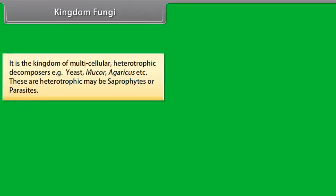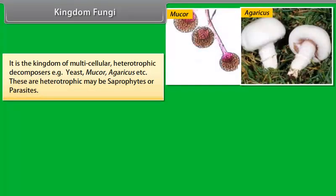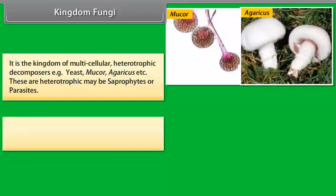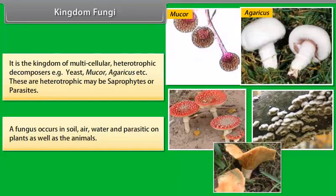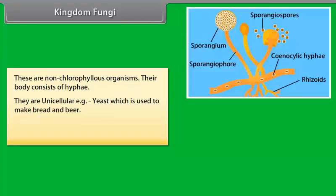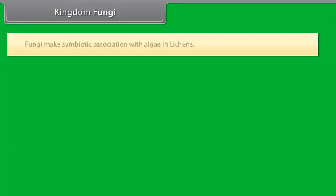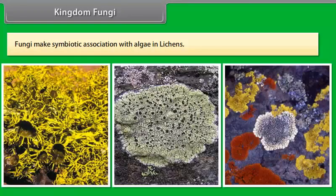Many Protista such as the algae are photosynthetic and are vital primary producers in ecosystems, particularly in the ocean as part of the plankton. Being eukaryotes, the protistan cell body contains a well-defined nucleus and other membrane-bound organelles. Some have flagella or cilia. Protista reproduce asexually and sexually by a process involving cell fusion and zygote formation. They may be divided into chrysophytes, dinoflagellates, euglenoids, slime molds, and protozoans. Examples: algae, diatoms, and protozoans.